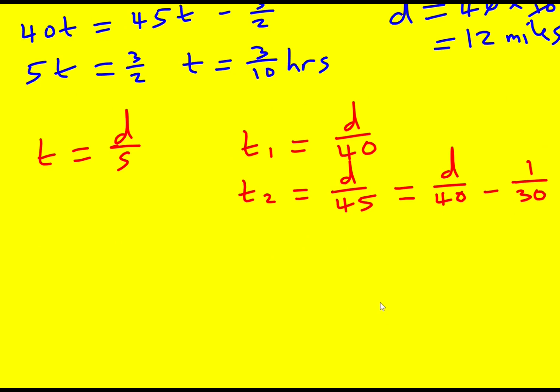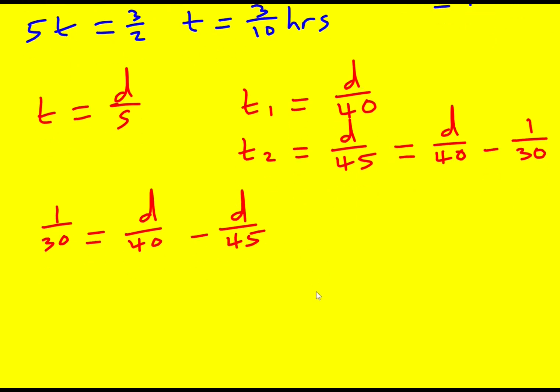We can actually get an equation down for the distance directly. That means we can write down that we can rearrange this, so 1 over 30 is going to be d over 40 minus d over 45. And we get an equation to solve, involving the distance, and we don't even involve the time at all.